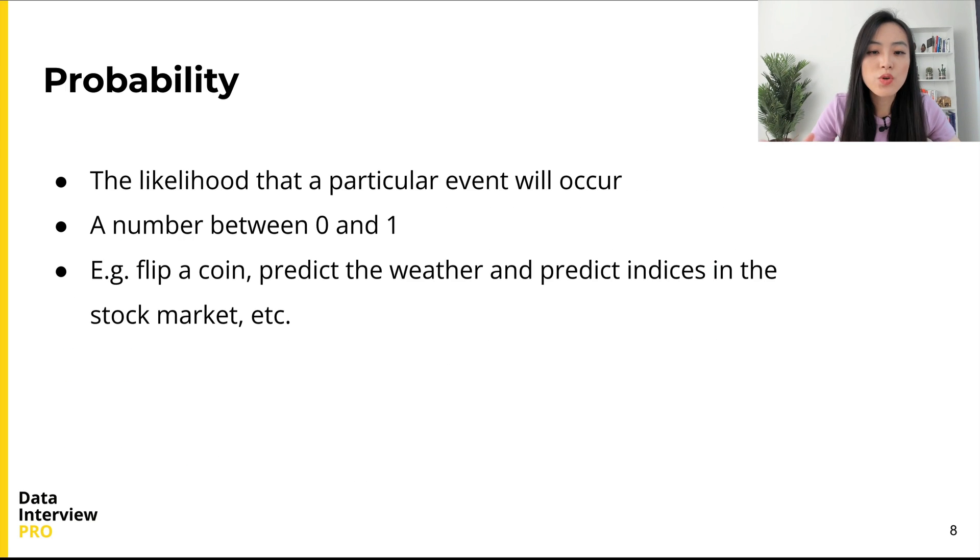Next, let's talk about probability. I'm sure you have heard the term many times. To put it simply, it reflects the likelihood that a particular event will occur. The probability of an event is a number between 0 and 1. As you can tell, probability is simply the assignment of numbers between 0 and 1 to possible events.